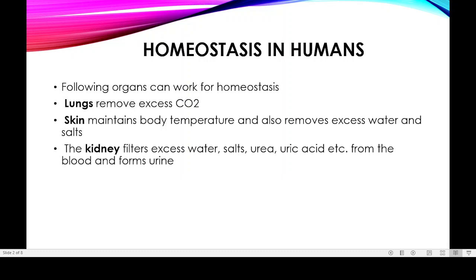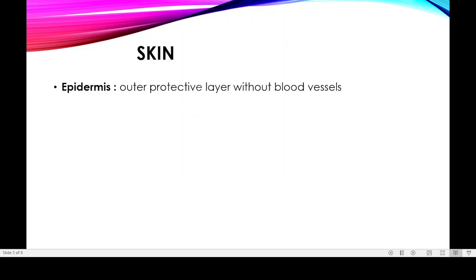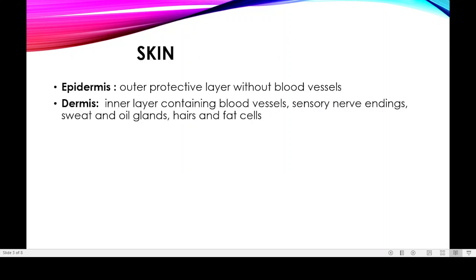Skin will maintain body temperature and can also remove excess water and salts in the form of sweat. The kidney can filter excess water, salts, urea, and uric acid to form urine from the blood, because it is a blood filter. These substances — urea, uric acid, salt, and water — are removed from the body through urine. These are the major organs playing a main role in homeostasis in humans.